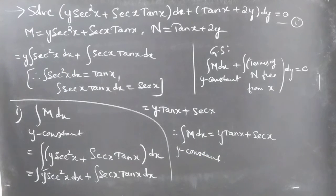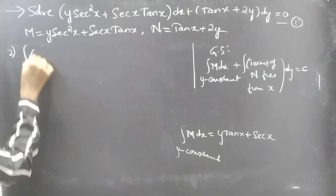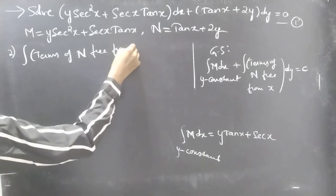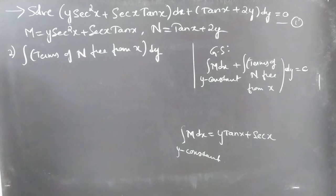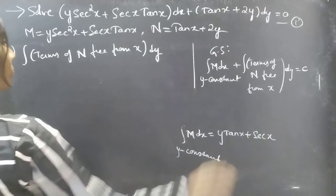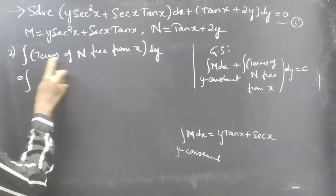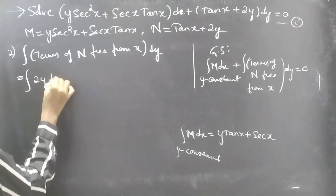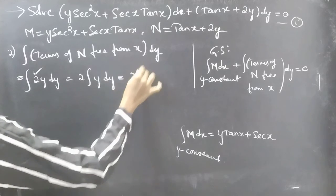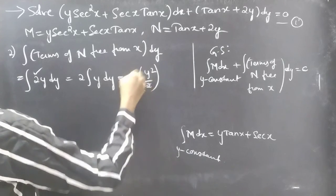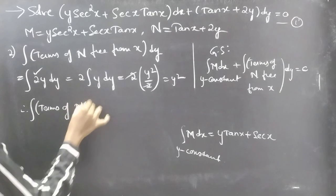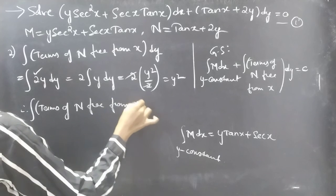Now for the second integral: integral of terms of N free from x into dy. Observing N equal to tan x plus 2y, the term which does not involve x is 2y. So the integral of 2y dy: we take 2 outside the integral, giving 2 ∫y dy, which equals 2 times y squared over 2. The 2 cancels and we get y squared.